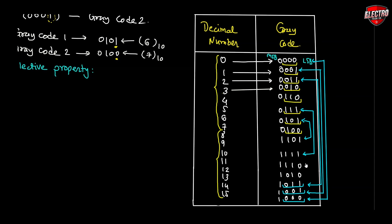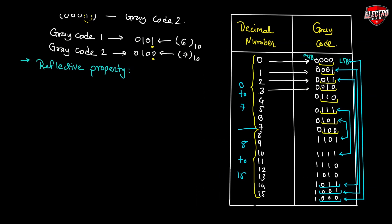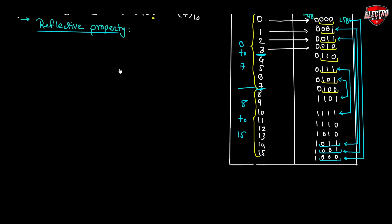If you observe all these gray codes, the bits from 0 to 7 are mirror images of the bits from 8 to 15. That is why this gray code is also known as reflective code or reflected code — because we get a mirror image of the first group of bits with the next group. The last three least significant bits of 0 to 7 are mirrored at 8 to 15, so the reflective property is satisfied in the gray code.